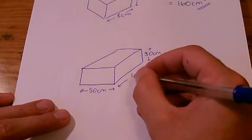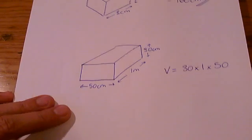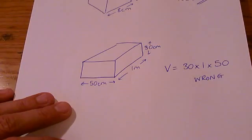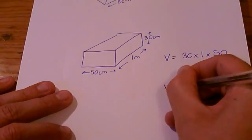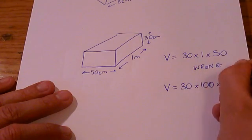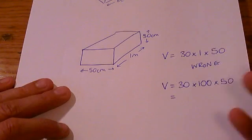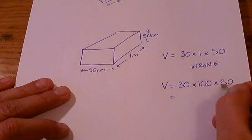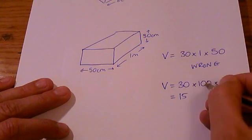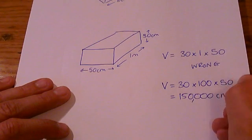So you must have consistent units if you're going to use this formula. You need to turn that 1 meter into 100 centimeters. Or you could have turned that into 0.3 and 0.5 respectively. I'm going to stick to centimeters. 30 times 100 times 50, what's that? 3 times 5 is 15, and then 1, 2, 3, 4 zeros. 150,000 centimeters cubed.